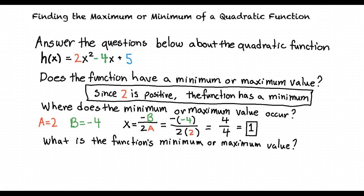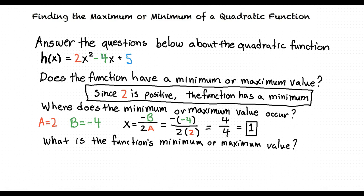Now that we have the x value of our minimum, we can find the y value by substituting the x value of the minimum into our quadratic function. Doing so, we will get a function that looks like this. Solving this out, we find that h is equal to 3. So our function's minimum value will be (1, 3).